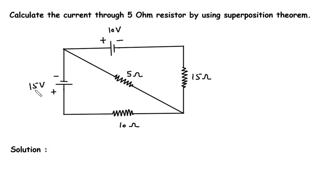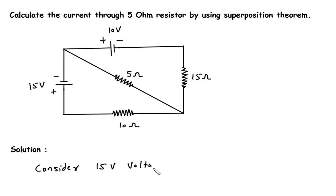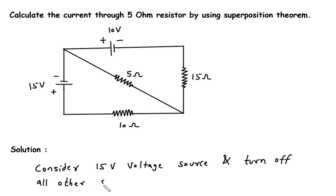First, we will consider this 15 volt voltage source and turn off all other sources. Now if we turn off the other voltage source, it will be a short circuit.